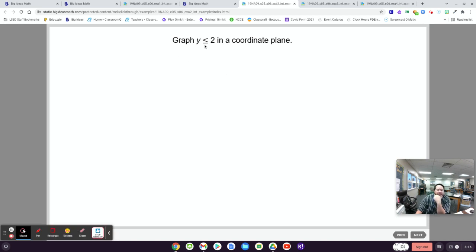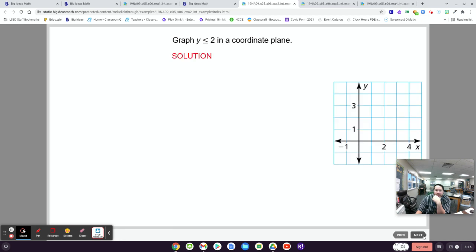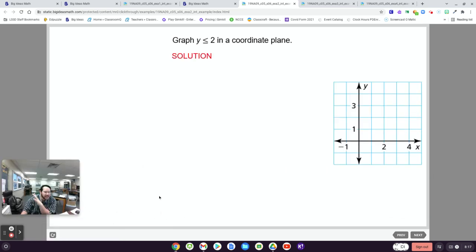Let's graph y is less than or equal to 2 in a coordinate plane. So you're going to need a coordinate plane. Basically, what you're going to do, I'm not going to have you do too much on Edpuzzle because I don't want to make a bunch of graphs and all that. So we'll just talk about this. So you're going to graph it as if it's y equals 2, which is a straight line across at 2. There you go.